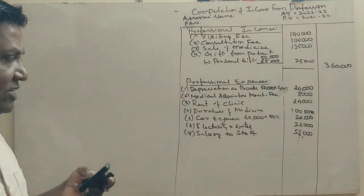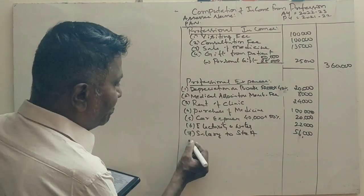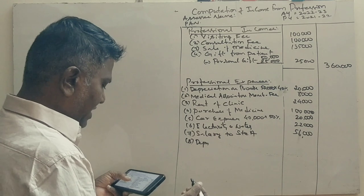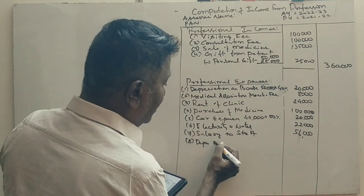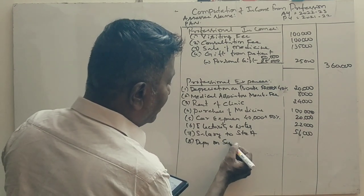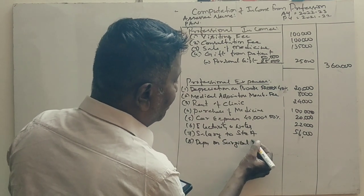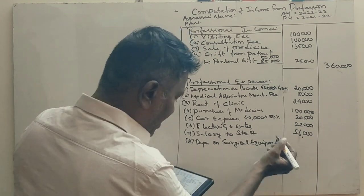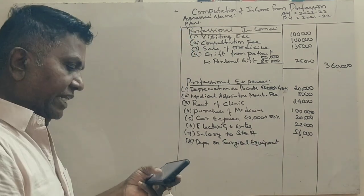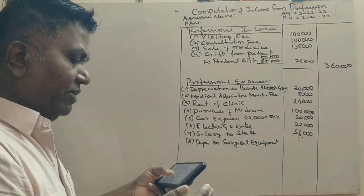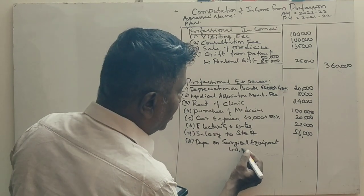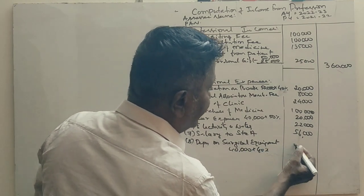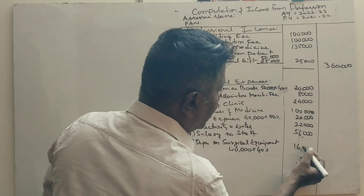Next: purchase of surgical equipment. Depreciation on surgical equipment is 40%. So on 40,000 rupees, 40% depreciation equals 16,000 rupees. This is the allowable depreciation expense.